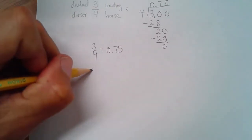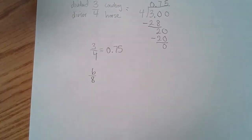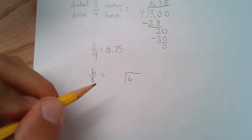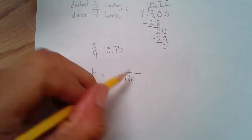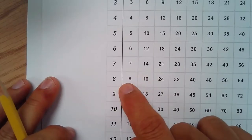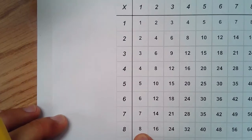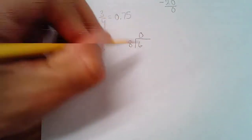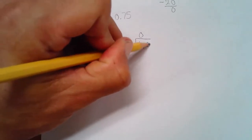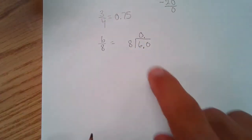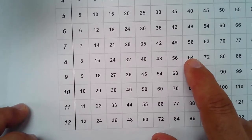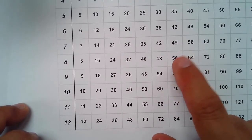I'm going to do six-eighths. Cowboy six, horse eight — cowboy sleeps inside, horse sleeps outside. Eight does not go into six; six is too small, so that's a zero. I'll put a decimal because I need more, and I put that decimal straight up. Now, eight going into sixty...